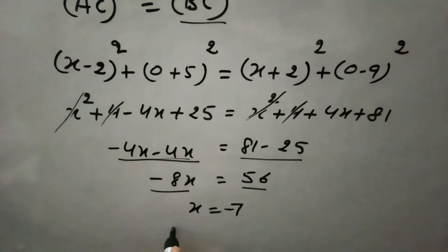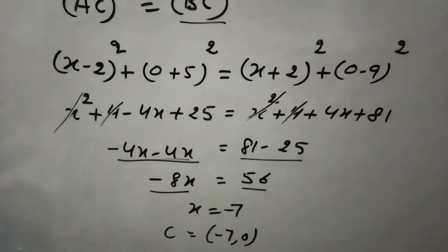So the coordinate of point C is (-7, 0). So this is the point on the x-axis.